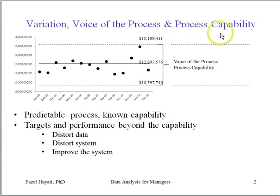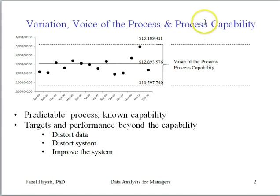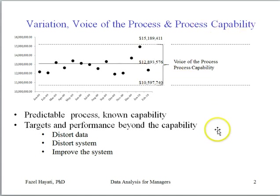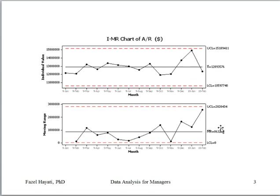If we're demanding a value that is beyond the capability, we need to improve this system to a higher level, where that value becomes a part of the system. So the options are: distort the data, distort the system, or improve the system.